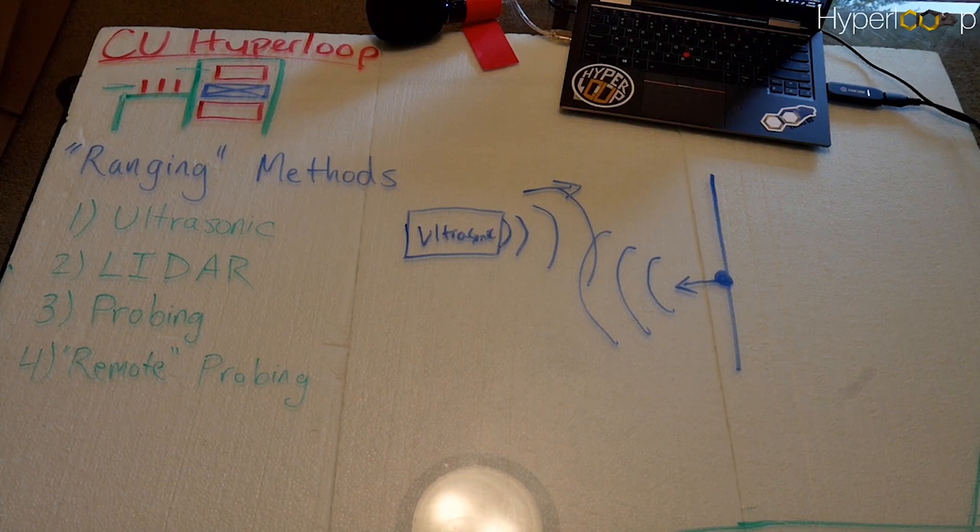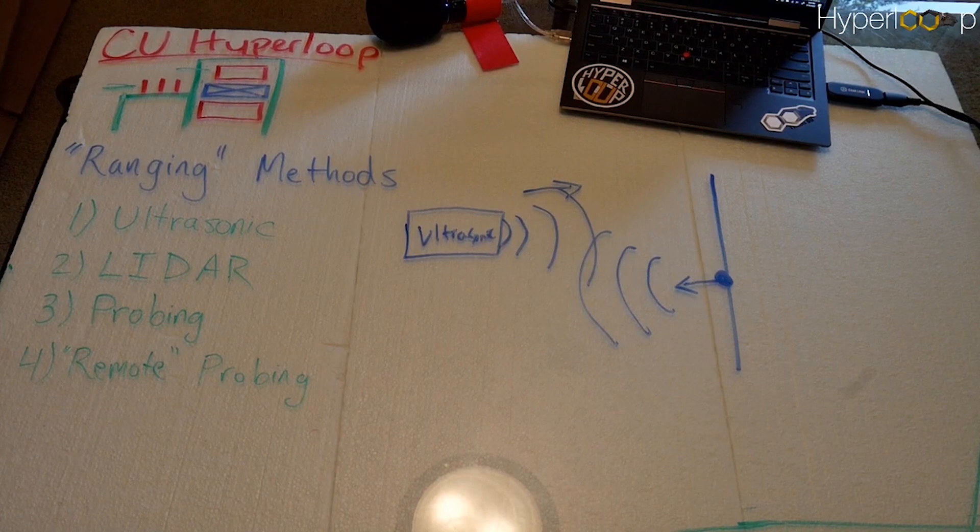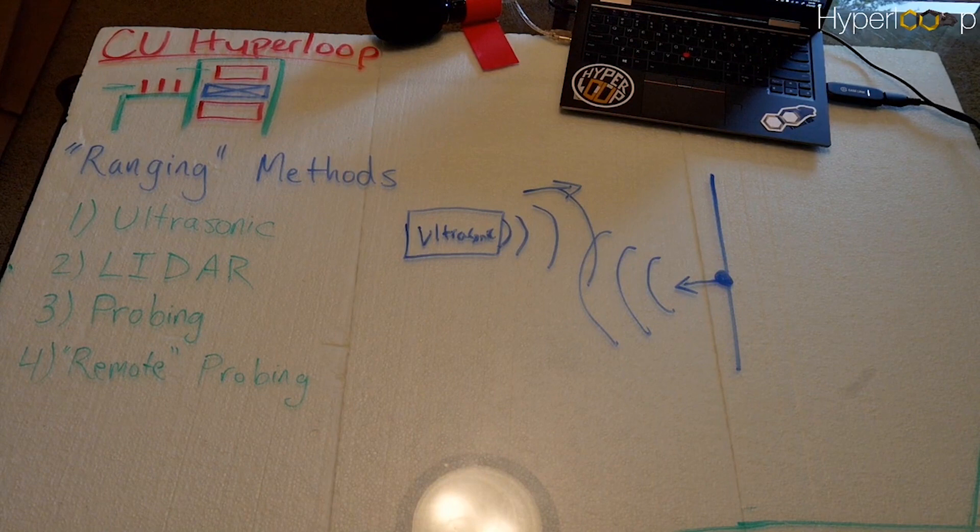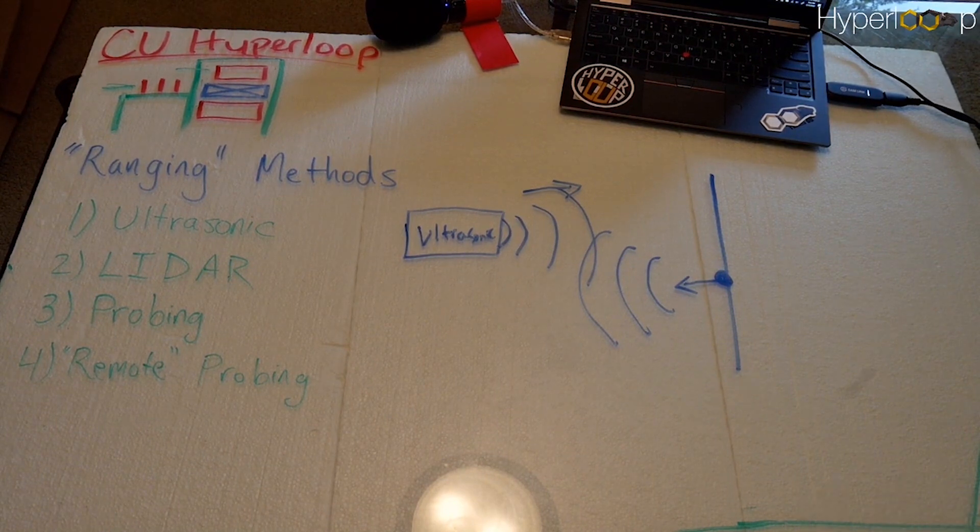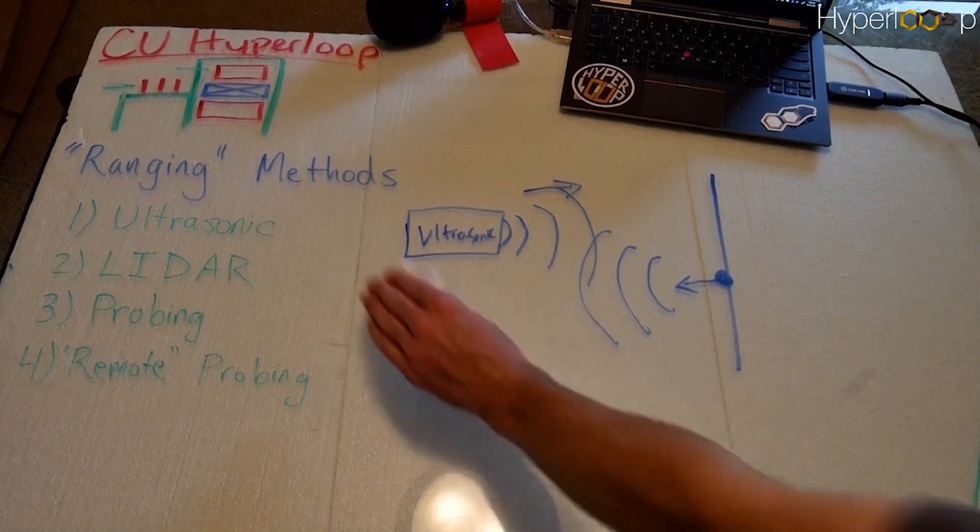That works fine for FTC in general, but sometimes if you're less than a meter, it's not going to be able to know what that distance is. Because of that, as well as because we don't currently have any ultrasonic sensors with us, we're not going to be using an ultrasonic sensor.